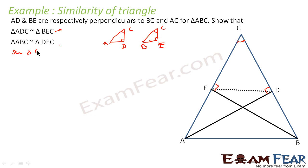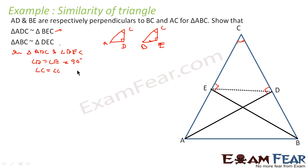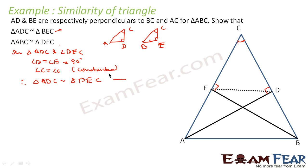In triangle ADC and triangle BEC: angle D is equal to angle E, both 90 degrees; and angle C is equal to angle C, which is the same angle by construction. Therefore, triangle ADC is similar to triangle BEC. Very simple — we are asked to prove the triangles are similar and we have proved it.